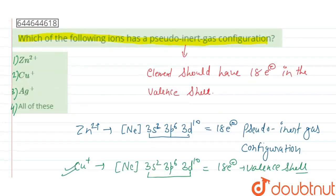So the correct option is all show pseudo configuration, so the fourth option is the correct option.